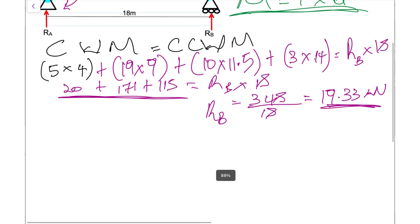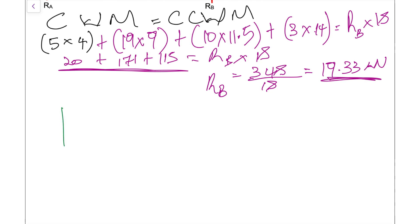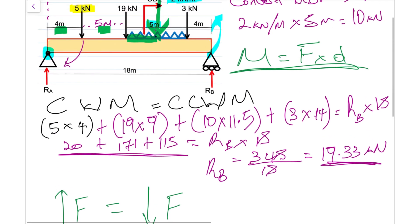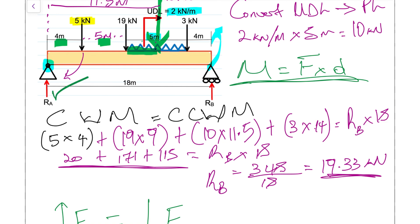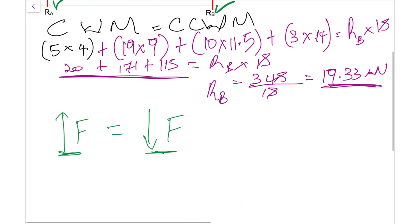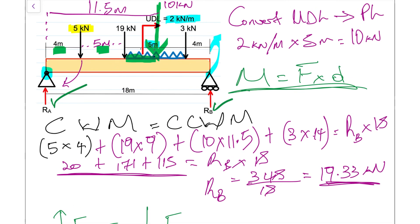To find RA, we're going to say that all the vertical forces, when we sum them up, should be balanced. The forces going up should add up to give you all the forces going down. The forces going up are RA and RB. Therefore, going up is RA plus RB, and going down is everything else, including our point loads: that 5 kilonewtons, that 19 kilonewtons, the UDL as a point load which is 10 kilonewtons, and that 3 kilonewtons.